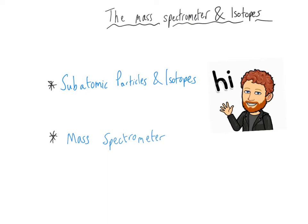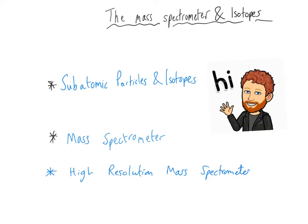Hello everybody and welcome to this video about the mass spectrometer and isotopes for A-level chemistry. In this video I will be talking about subatomic particles and isotopes, and also the time of flight mass spectrometer. This video is part of a larger video covering the whole of atomic structure, but I've separated it out so it's more bite-size, and I've also added on the high resolution mass spectrometer, so it is slightly different to the version in the full topic.